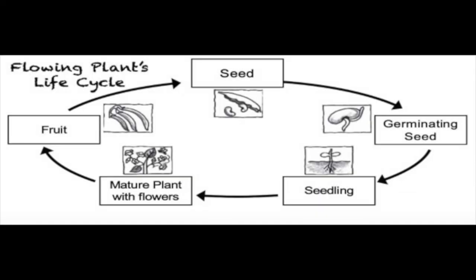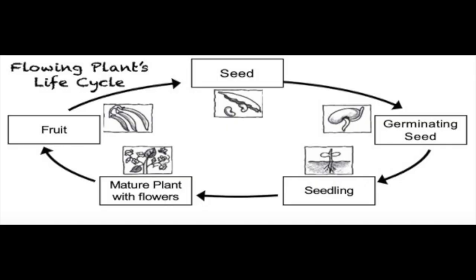Our last life cycle is that of a flowering plant. First, it starts off as a seed, and then it becomes a germinating seed that grows into a seedling, and then it grows into a mature plant with flowers. That plant can also have fruit, food, or of course flowers. And then the cycle starts all over again, and we're back at seed.